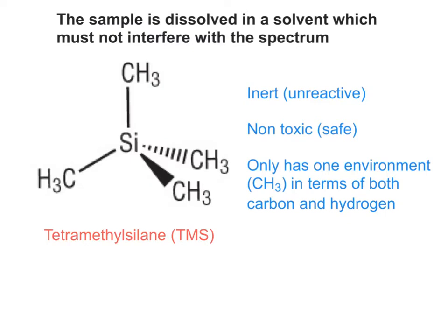To hold our sample, we need a special solvent that doesn't react with the sample, is safe to use for the technicians operating the NMR machinery, and won't interfere with the spectrum because it only has one environment in terms of both carbon and hydrogen. That's the same one, CH3, all the way around the molecule. It's tetrahedral and it's called tetramethylsilane. Four methyl groups attached to one silicon atom.